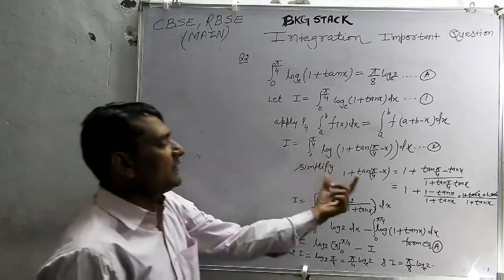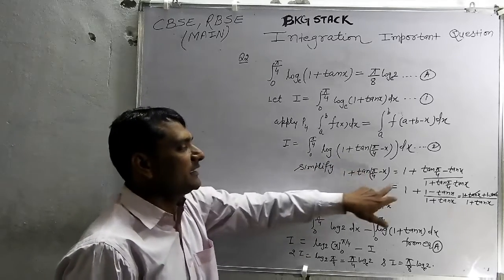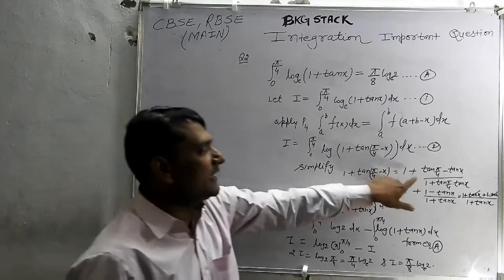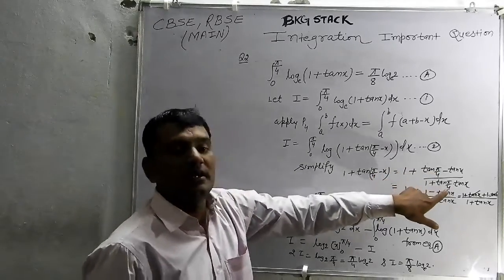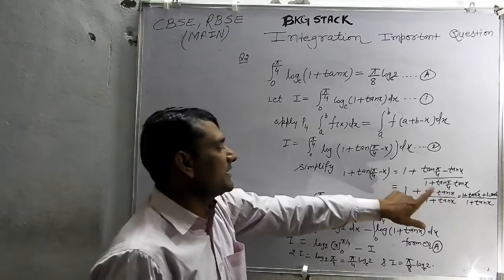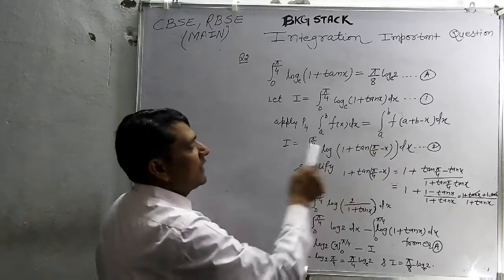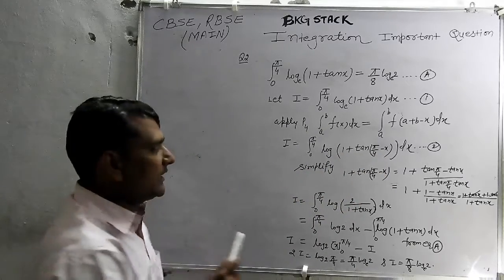Now, we will simplify the 1 plus 10 pi by 4 minus x in the form of 1 plus 10 a minus b equal to 10 a minus 10 b equal to 1 plus 10 a, 10 b. On simplification, it gives 2 upon 1 plus 10x that is placed in the equation 2 at the position of 1 plus 10 pi by 4 minus x.